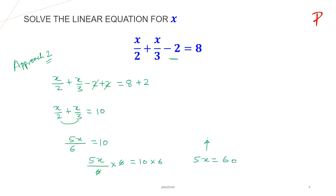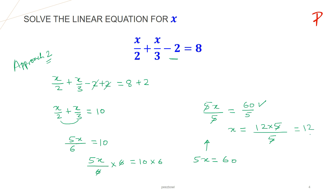Now we need to follow the same process. In order to remove 5 from 5x, let us divide both sides by 5. This 5 and this 5 will cancel each other, and we have x equals 60, which can be written as 12 multiplied by 5. The 5 in the denominator cancels, and what we got is 12. So in both ways, we found that the value of x is 12. This is the answer.